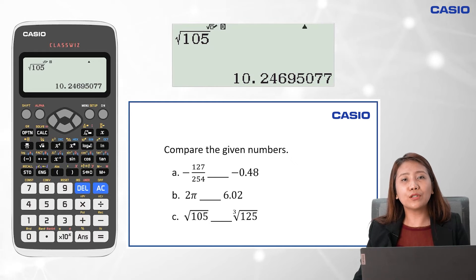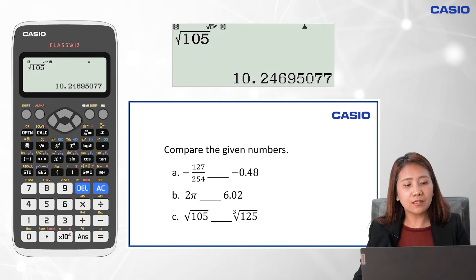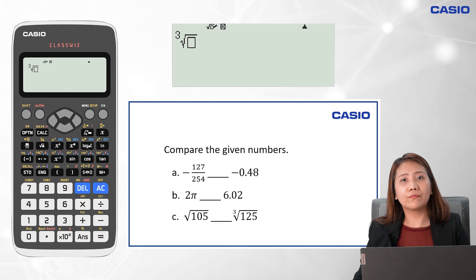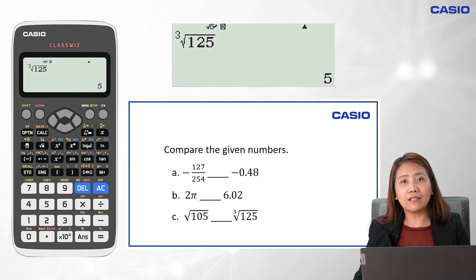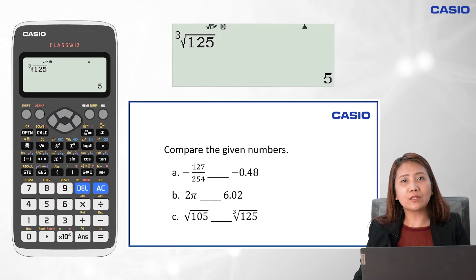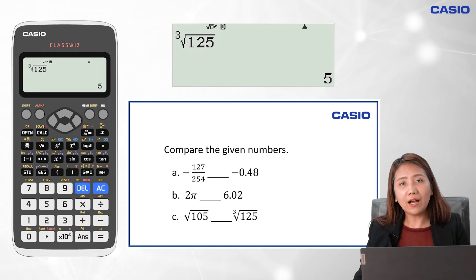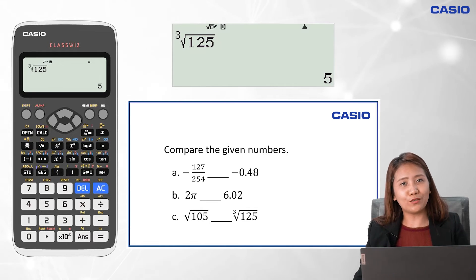For the cube root of 125, we key in shift, then the square root symbol, then key in 125, press the equal sign, and that gives us 5. Since 10.25 is greater than 5, thus the square root of 105 is greater than the cube root of 125.